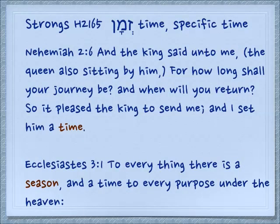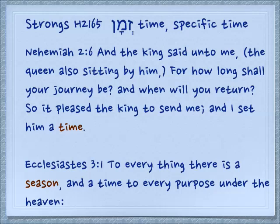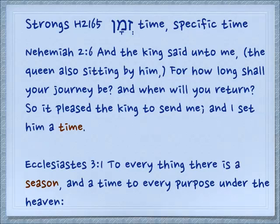Less common in biblical Hebrew is the word 'zman,' which means a specific time. In modern Hebrew we'd say 'do you have time for me?' — it's not seasonal time, it's an amount of time, a specific time. Nehemiah 2:6: 'And the king said unto me, for how long shall your journey be? And when will you return? So it pleased the king to send me, and I set him a time' — a time frame for when I'll be back. Again from Ecclesiastes 3:1: 'To everything there is a season' — this is the zman, a specific period of time — 'and a time, an et, to every purpose under the heaven.'